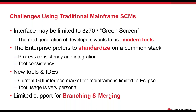Another challenge is limited support for branching and merging on mainframe SCMs. Developers want to work isolated on feature branches — a key facet of DevOps. But mainframe SCMs were not designed with feature branching from the get-go. Typically one person works on a piece of code at a time, which is untenable if you need to move fast, work concurrently, and promote without dependencies.